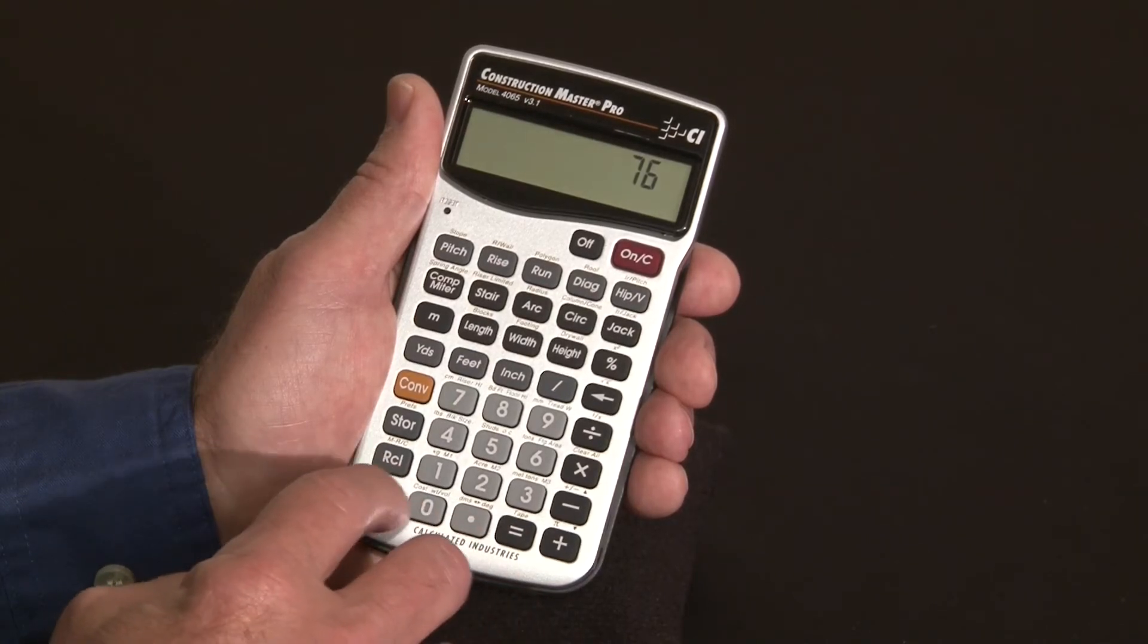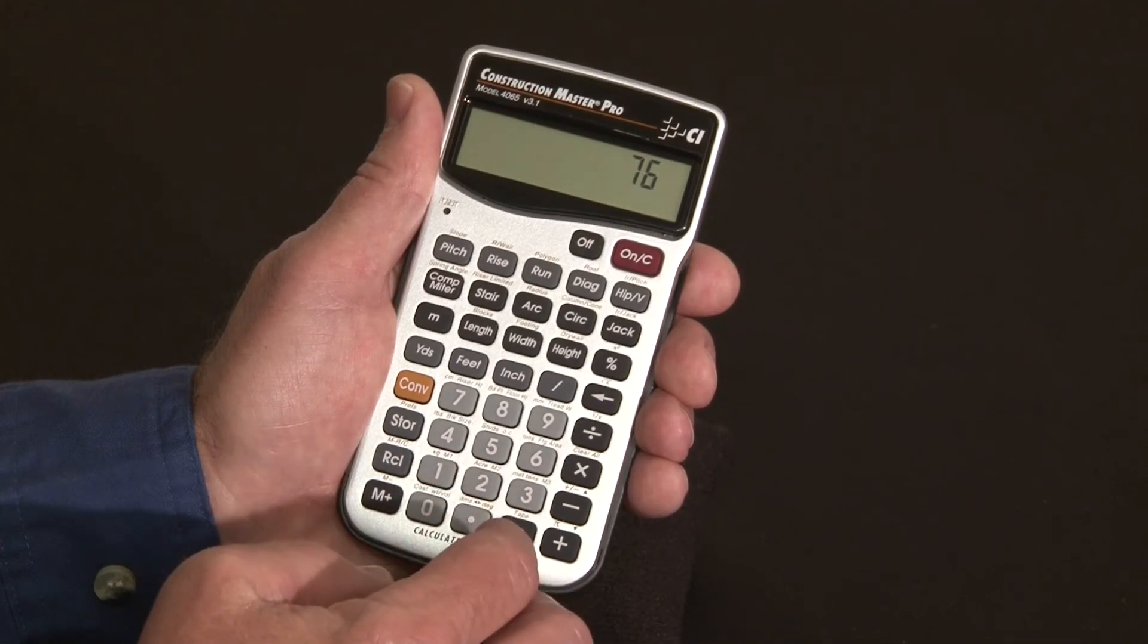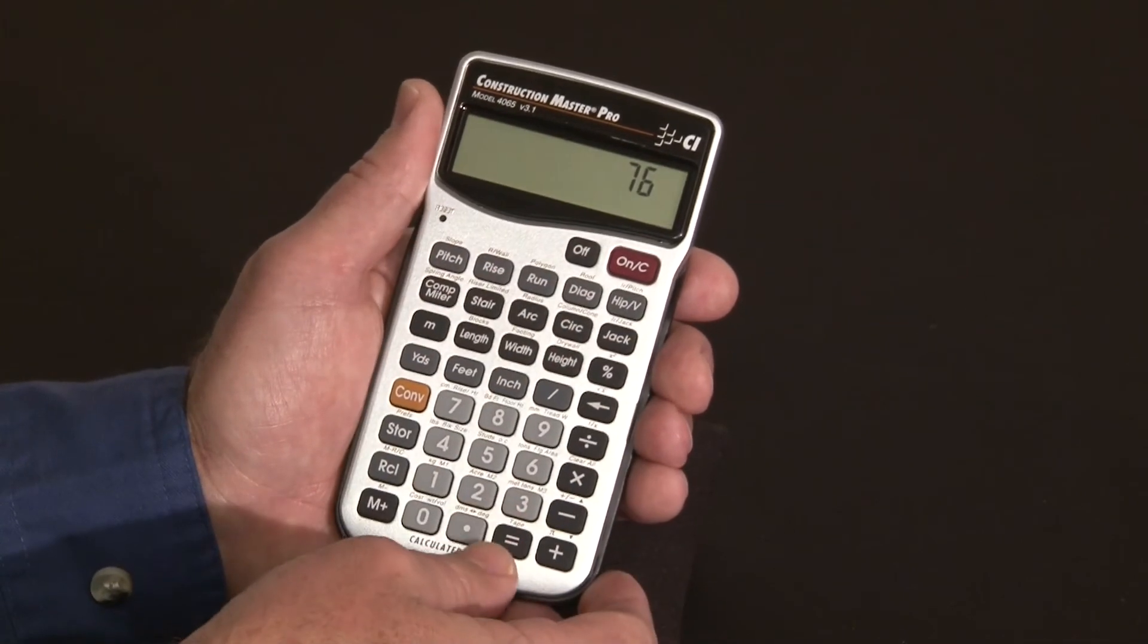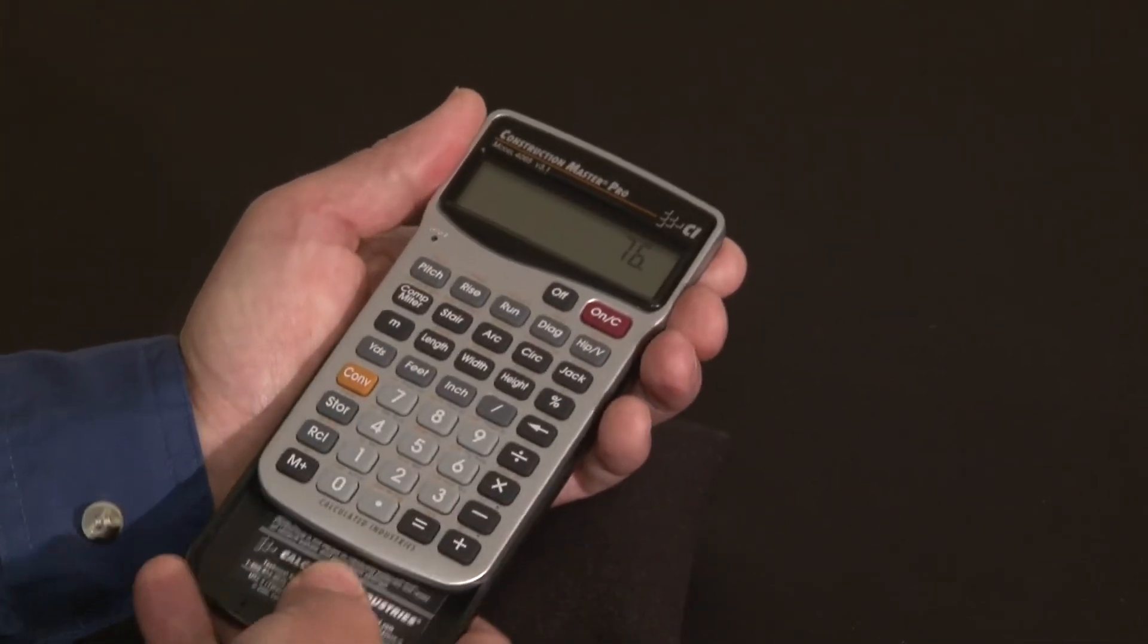There's four memory locations where you can store variables and values. And it all comes in a job site tough case with a quick reference guide right inside the cover. Snaps on the back.